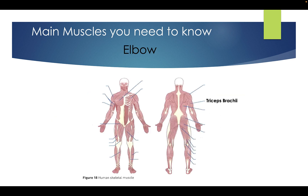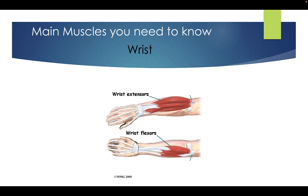When we break down the elbow, we need to know the tricep brachii — you can see it from both the front and the back — and we've got our bicep brachii. Then when we're looking at the wrist, we've got our wrist extensors and our wrist flexors. There are other muscles within here but at the moment you only need to worry about wrist extensors and wrist flexors.